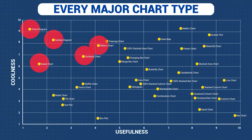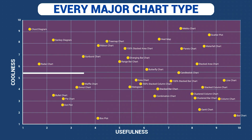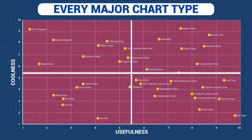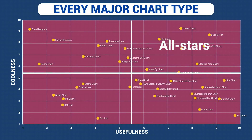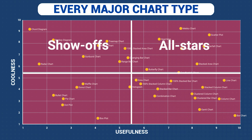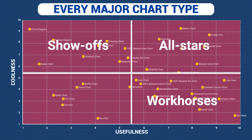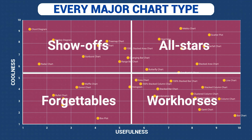So now we've got all our charts ranked into this nice scatter plot, and I split it out into four quadrants: all-stars, which are both useful and cool; show-offs, which are cool but not useful; workhorses, which are useful but not cool; and then forgettables — not cool, not useful.